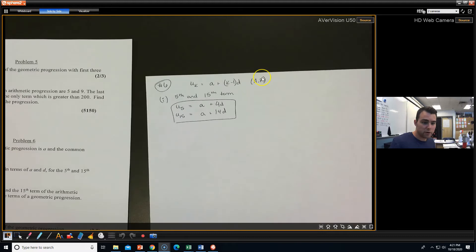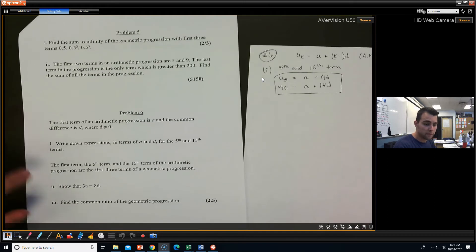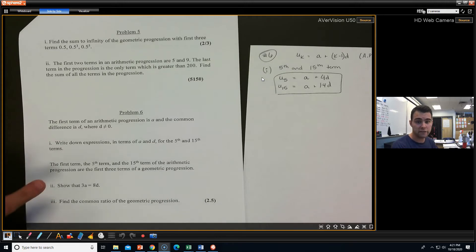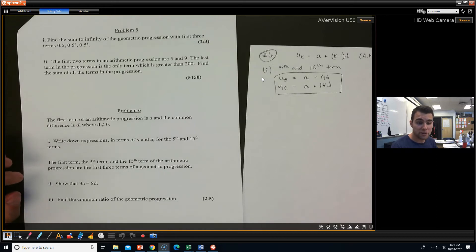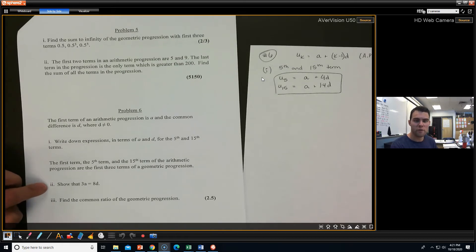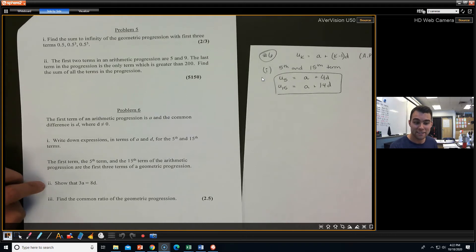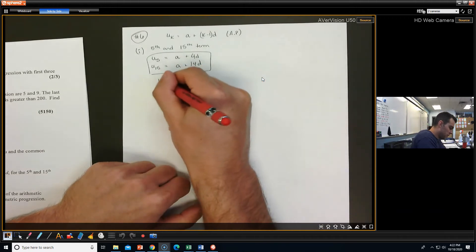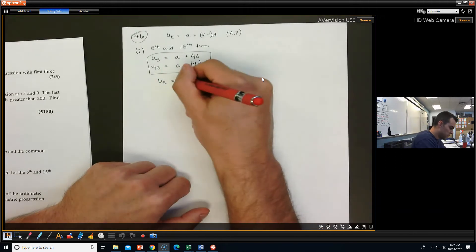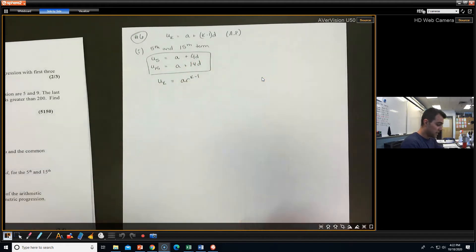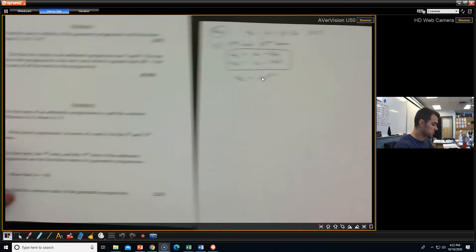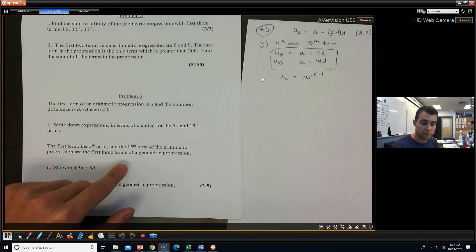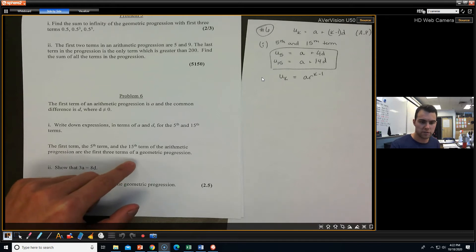Well, the second part of this is saying now the first term, the 5th term, and the 15th term of this arithmetic progression are the first three terms of a geometric progression. And then part two wants us to show that 3A equals 8D. So we're going to need our geometric progression like the Kth term of that as well for part two. So that would be U sub K equals AR to the K minus 1. And really, it only told us that the first, 5th, and 15th term of the AP are really just the first three terms of the GP.